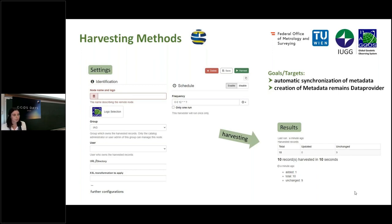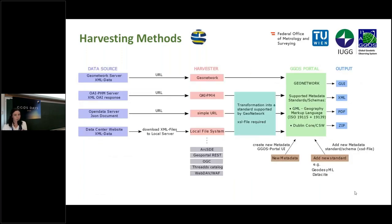After finishing the harvesting run, the results — including the total number, the unchanged and updated entries — are clearly presented in the table which you can see on the right side of the slide. This overview shows the import and export functionalities of GeoNetwork in the middle, and in pink and gray you can see the different harvesting methods.